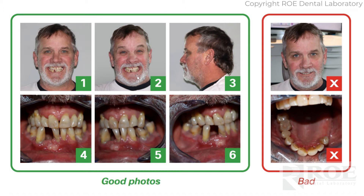We want to make sure we have the transition lines correct. If you're dealing with any kind of class two or class three, we'd like a profile picture. We do not need any occlusal pictures or orthodontic pictures. We want a patient showing a smile and a nice expression so that we can see how they naturally are.